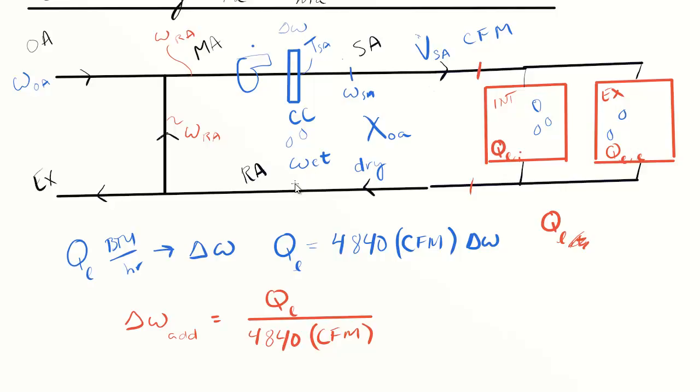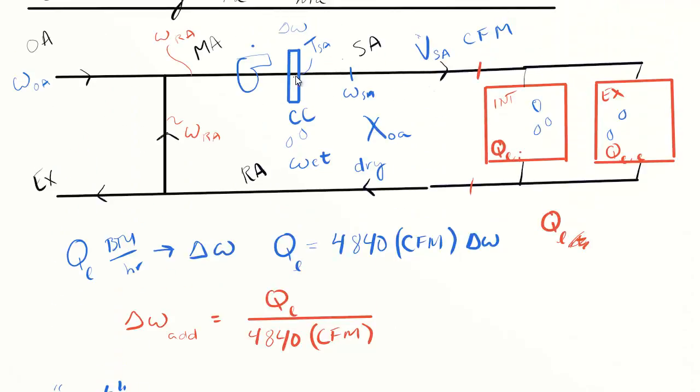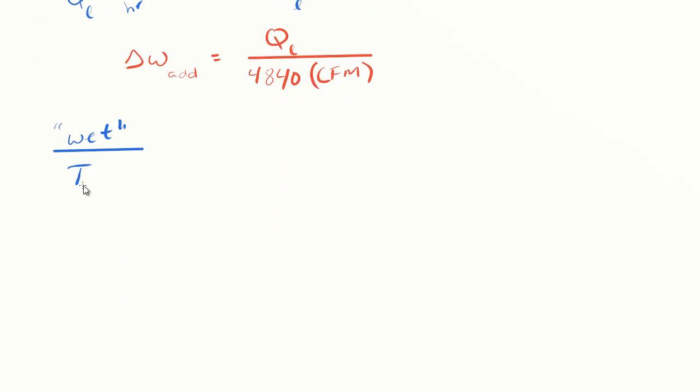Let's begin by assuming the wet case. If the cooling coil is wet, one nice thing we know is that this air coming off the coil is saturated or near saturation. A good assumption is that it's at 90% relative humidity coming off the coil. If you know psychrometrics, having a temperature and relative humidity can lead you to an omega value.